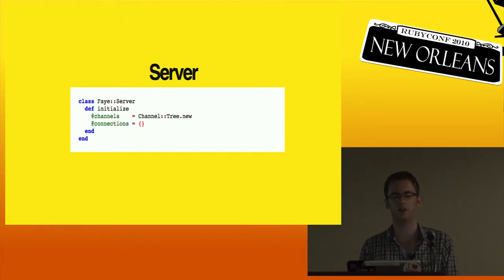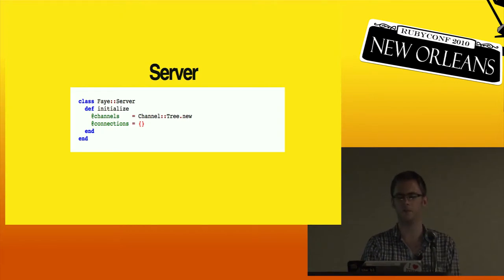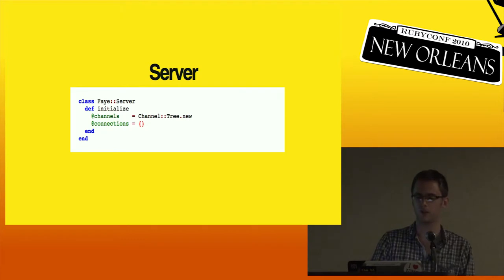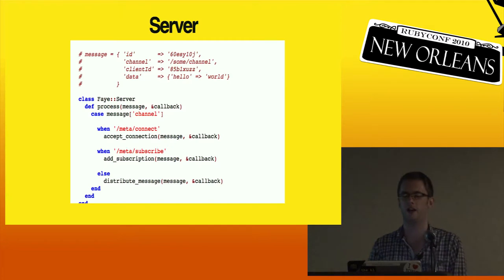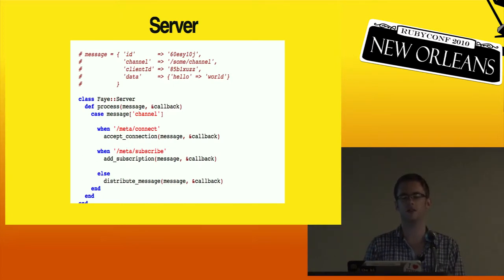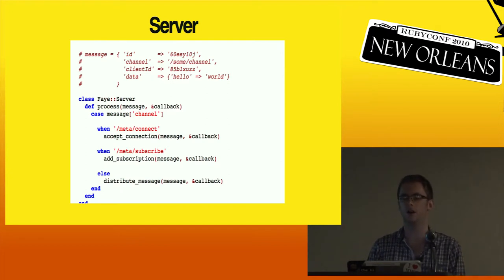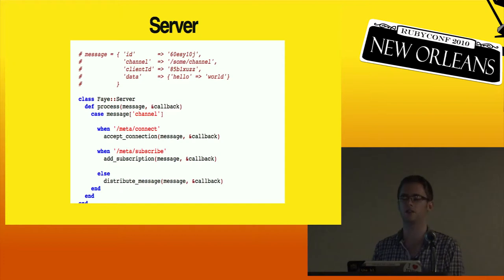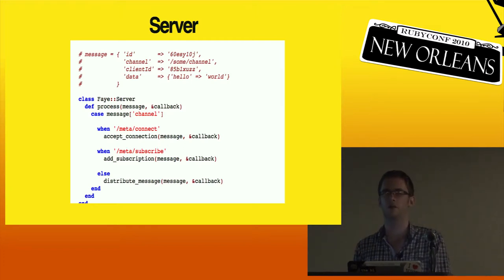The server just has a pool of channels - they're a tree for routing purposes - and a set of connections indexed by client ID. The client ID is something the protocol handles for you so you don't have to deal with tracking which connection means which client. Messages that come into the server all have a message ID, a channel they've been sent to, a client ID for who sent it, and a data field which is the data you published to that channel. There are also special channels that Fay uses for internal management - two of them are called Meta Connect and Meta Subscribe.